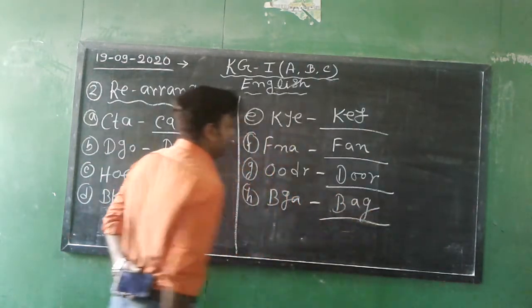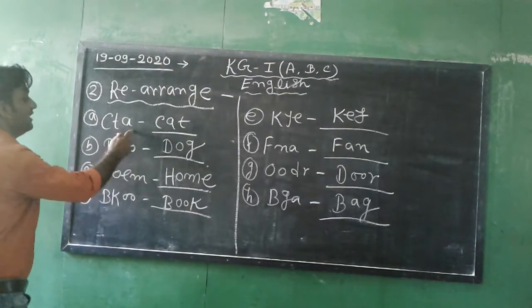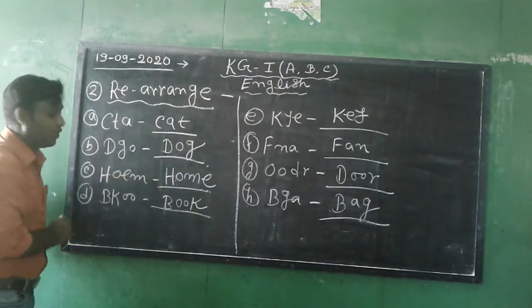Next, KYET, KEY. Next, FAN, FAN. Next, ODR DOOR. Next, BGA BAG. Our second topic is rearrange the word. CTA, CAT. DGO, DOG, correct.